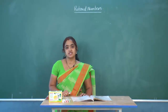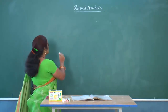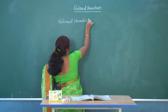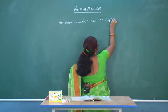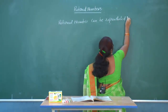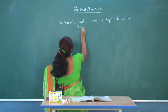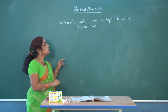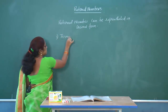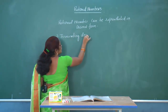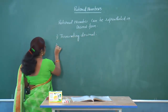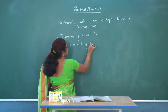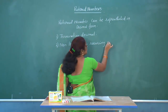Let us see the decimal representation of rational numbers. A rational number can be represented in decimal form. When we convert a rational number into decimal form, there are two types: terminating decimal and non-terminating recurring decimal, also called repeating decimal.